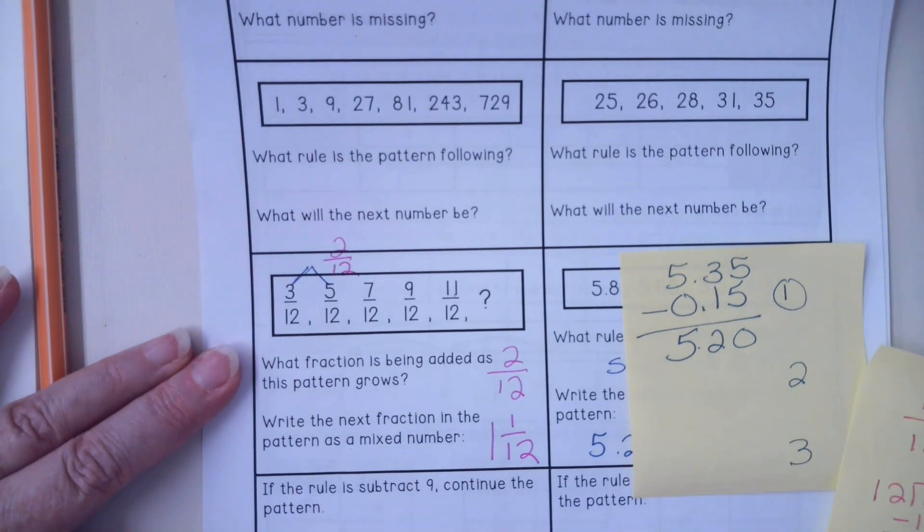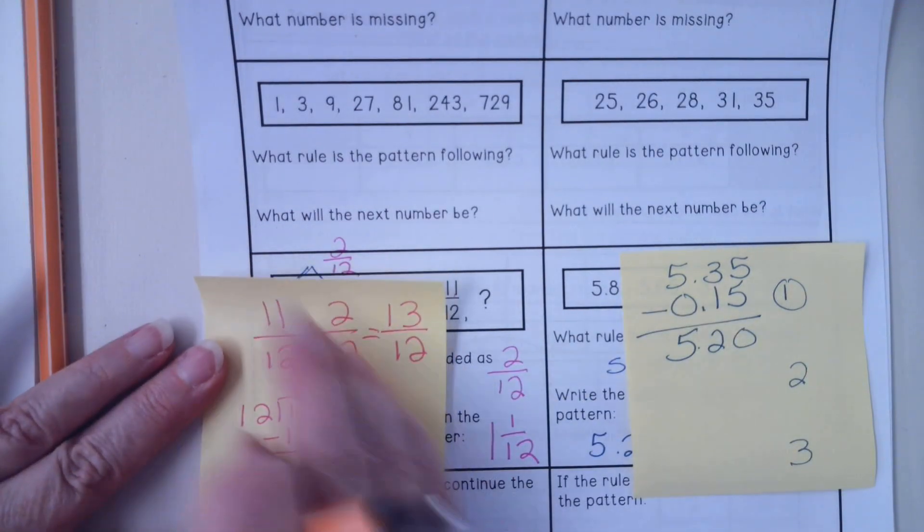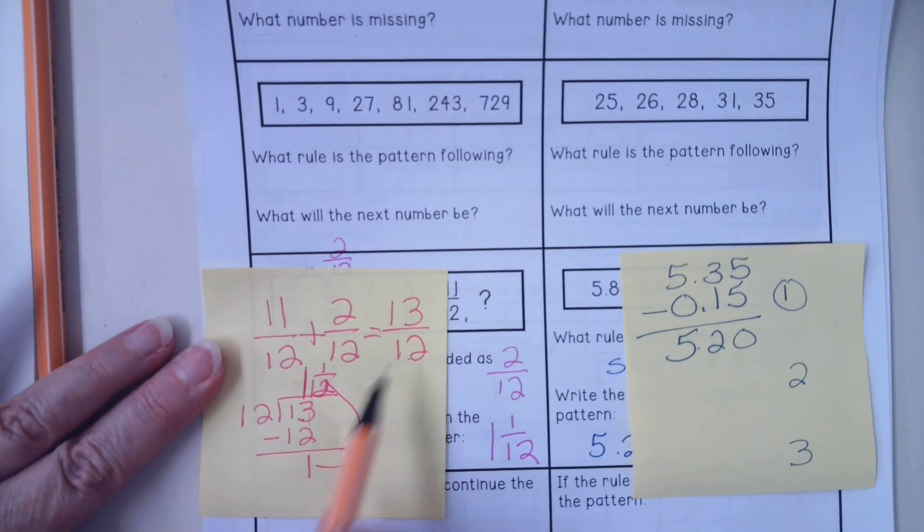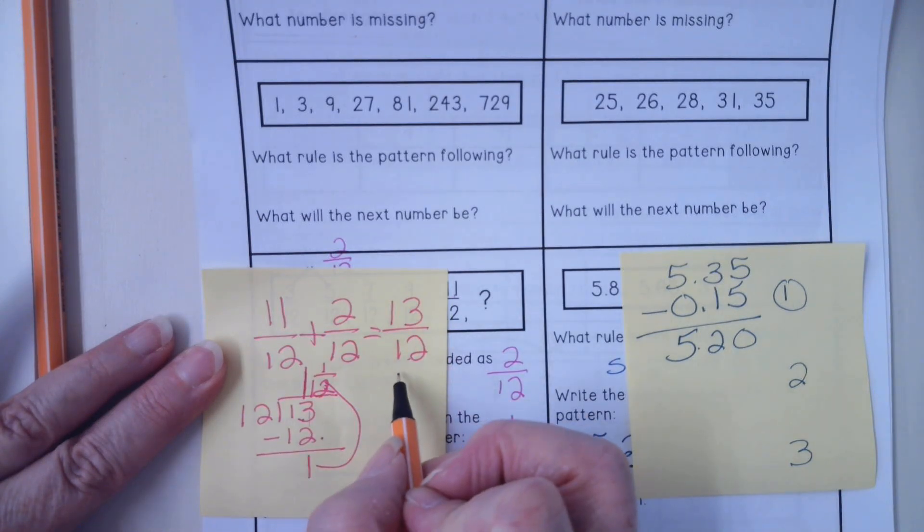This is how you change an irregular fraction into a mixed number.